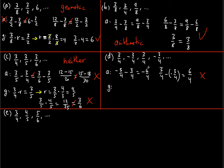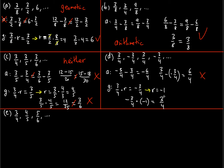Just to confirm with math: 3/4 times r equals negative 3/4, so r equals negative 3/4 divided by 3/4, which is negative 1. Testing between the second and third terms: negative 3/4 times negative 1 is indeed positive 3/4, as required. So this sequence is confirmed geometric.